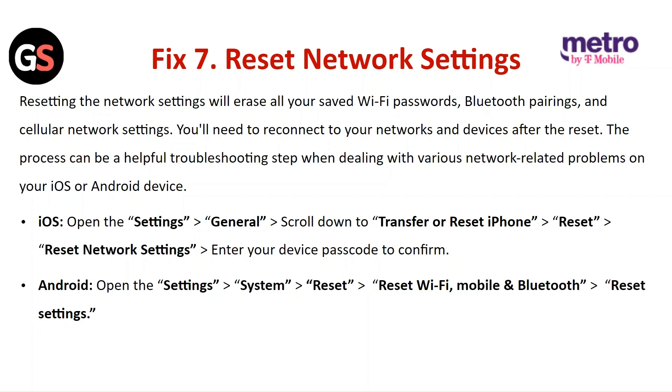For Android, open the Settings system, then Reset. Click on Reset Wi-Fi, Mobile, and Bluetooth, and tap on Reset Settings.